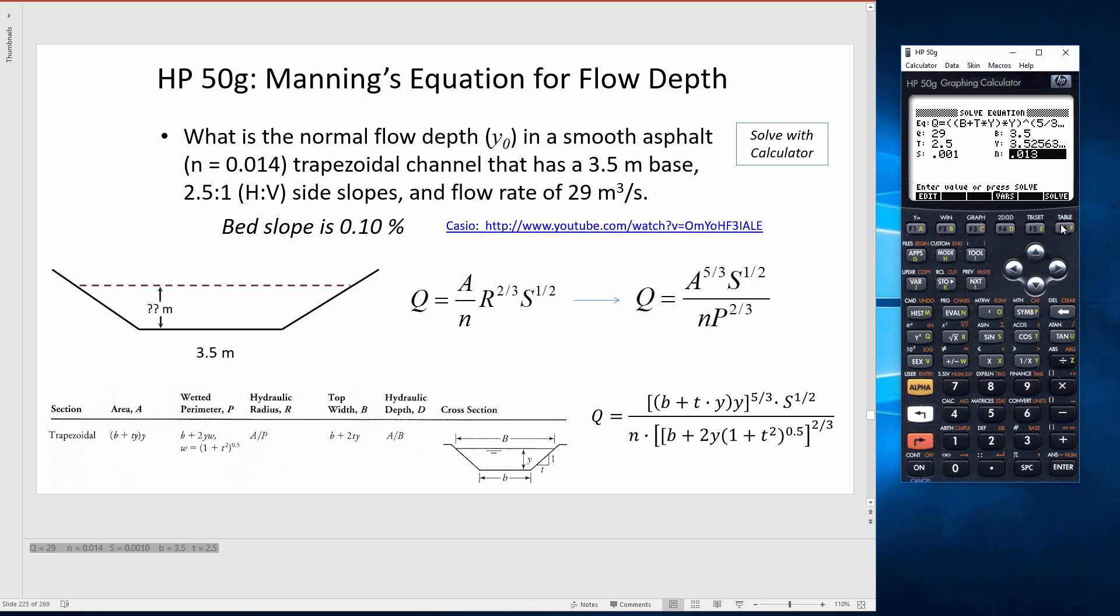And finally, I need to make sure that my N value is in there. For this one, it's 0.014. So then I scroll up to the variable I want to solve for. In this case, I'm going to be solving for the depth.